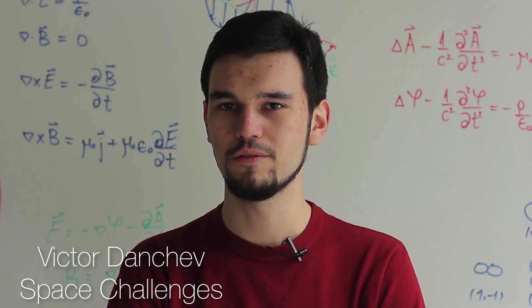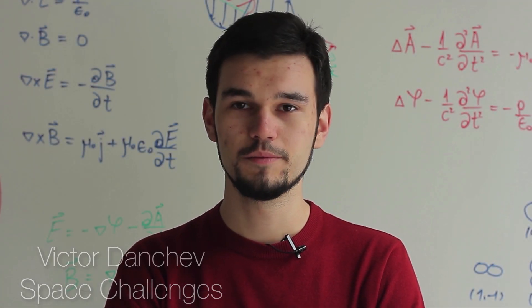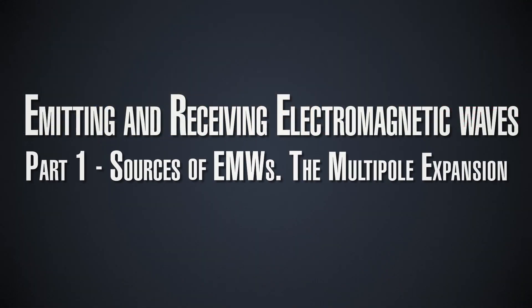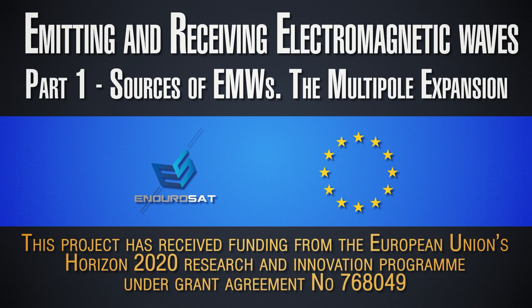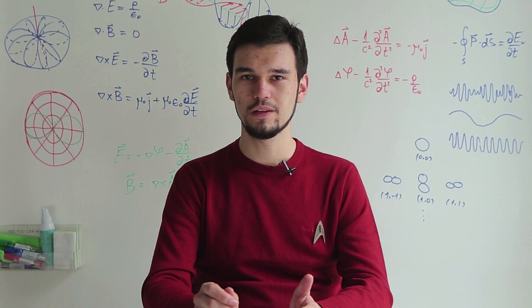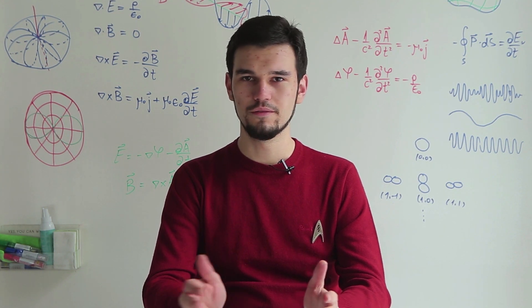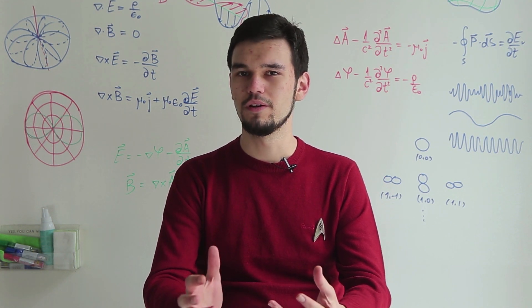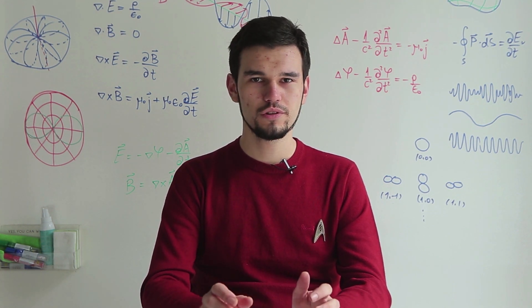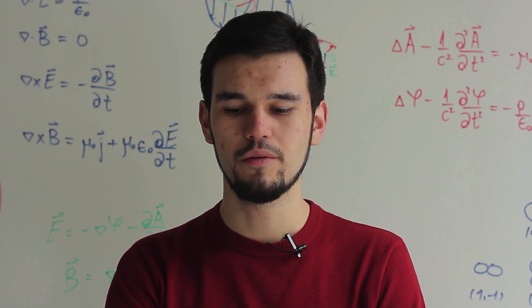Today we're going to be speaking about electromagnetic waves and more specifically how we emit or receive them. What are the sources and how do we describe the sources of electromagnetic waves? This is something more general than our previous discussion, because last time we restricted ourselves to free waves. Now we're going to be speaking about electromagnetic waves in general — solutions to Maxwell's equations, wave solutions, not only in the vacuum, not only in the lack of sources, but exactly close to or a relatively large distance away from the sources. We are not interested in free wave propagation; we're interested in how it is produced.